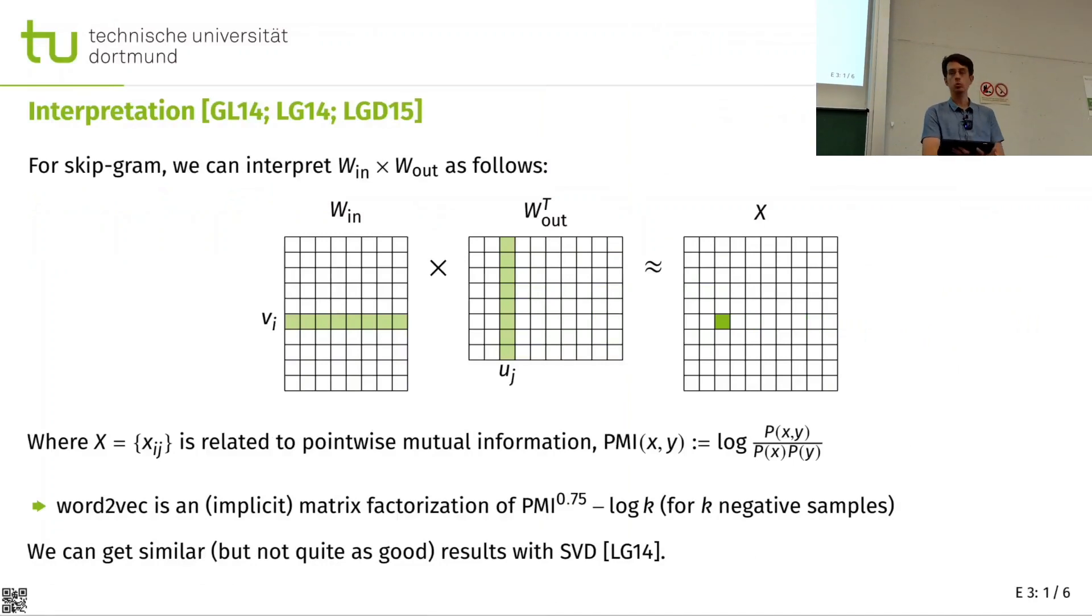The first part is what can we actually do to understand what is going on. So there's a series of works in 2014, 2015, that tries to interpret what this does. Because if you look at the paper and at the proposal of Word2Vec, I think it didn't even receive very good peer review. It was only accepted as a poster because it's kind of just, well, we tried this and it worked. There is not really much theory in why and how.